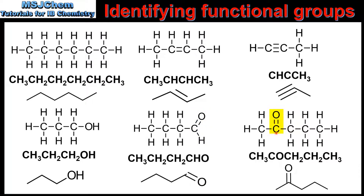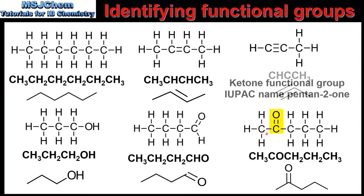In our final example on this slide we have a carbon atom with a double bond to an oxygen, which is also bonded to two other carbon atoms. Therefore this molecule has a ketone functional group. In the condensed structural formula the ketone functional group is represented as CO, and in the skeletal formula only the double bond to the oxygen is shown.